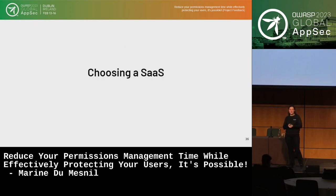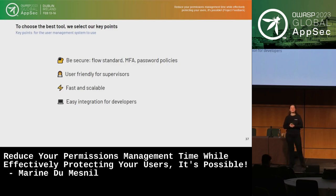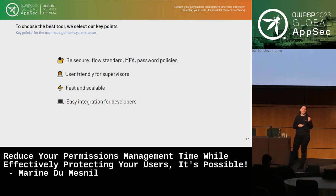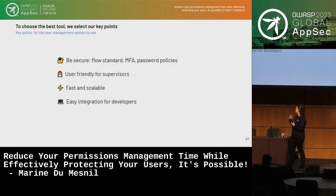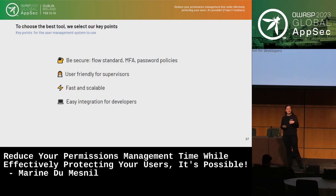How do we choose a SaaS? We decided on key control points to find the best SaaS possible for our app. First, we wanted it to be secure — with all the security features needed. Because it was causing bugs, we wanted it to be user-friendly, so supervisors could manage their team and assign the right permissions. And two other smaller but still important features: it needed to be fast and scalable, and obviously easy to integrate into our app.